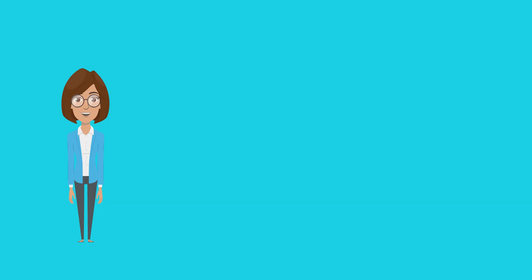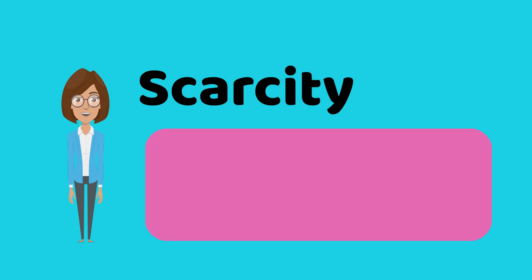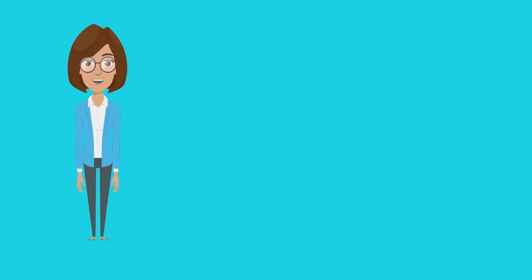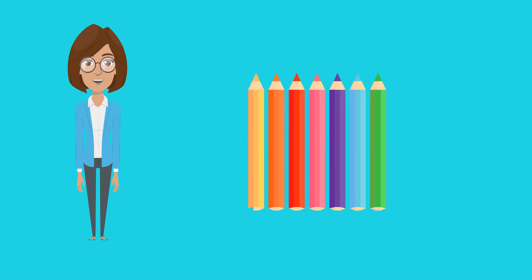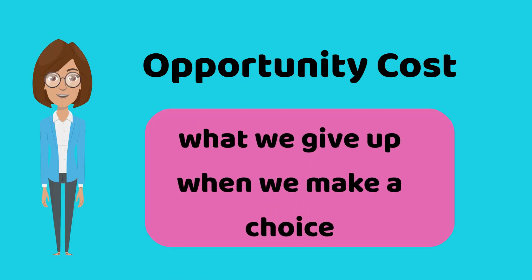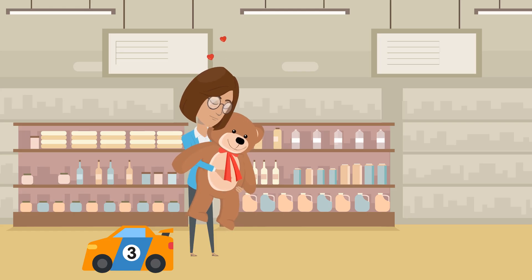Let us now recap the two new concepts we have learnt. Scarcity is not having enough of something — this could be not having enough colored pencils for everyone in the classroom, or simply not having enough money to buy something we want. An opportunity cost is what we give up when we make a choice. If I choose to buy a bear, my opportunity cost could be buying the toy car.